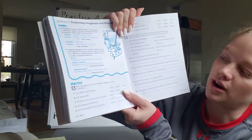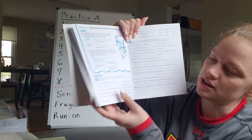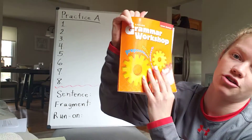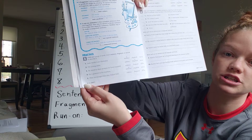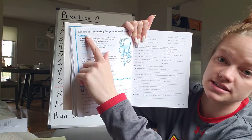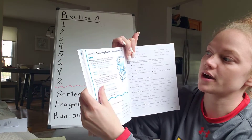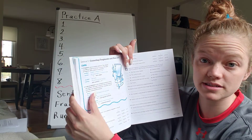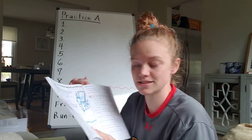So right now you should be in your grammar book on page 32, which is lesson 7, Correcting Fragments and Run-Ons.